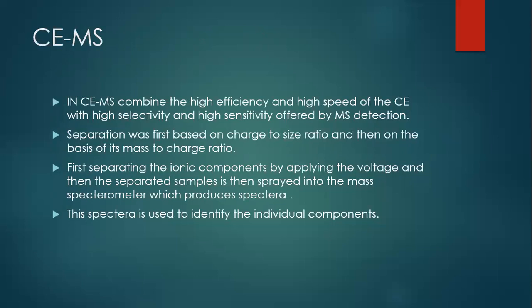First, separation is based on charge-to-size ratio, then on mass-to-charge ratio. The ionic components are separated by applying voltage, and then the separated sample is introduced into the mass spectrometry system, which produces spectra that allow easy identification of individual components.